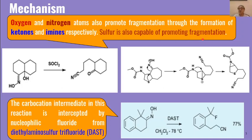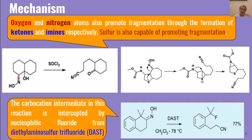For example, in this oxime the alpha carbon bears a hydroxy group, meaning this oxygen will promote fragmentation. In the first step, thionyl chloride reacts with the OH group, then fragmentation of this carbon-carbon bond takes place, generating a carbon-nitrogen double bond. The hydroxy group is converted into a ketone group, so ketones are formed as the product.